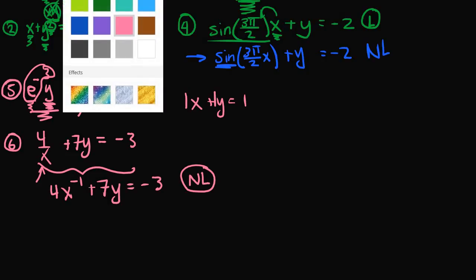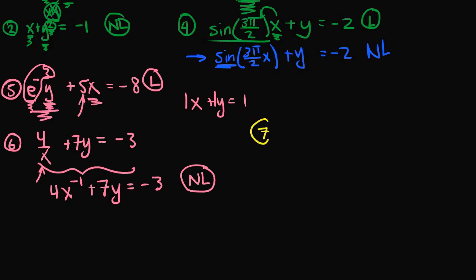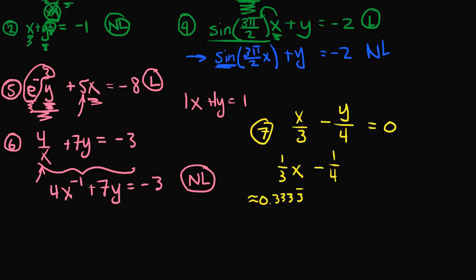I'm going to change the color to yellow. Example 7: x over 3 minus y over 4 is equal to 0. There are fractions, but none of the variables are in the denominator — x and y are both in the numerator. This is really 1/3 times x minus 1/4 times y equals 0. Since x and y are only raised to the 1st power, not multiplied together, not inside any function, and not roots of anything, this equation is linear.